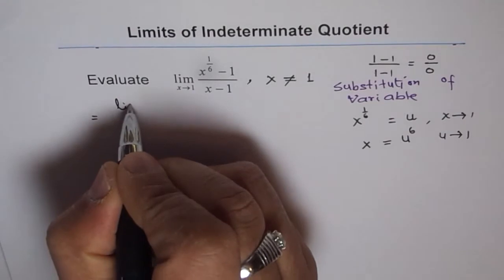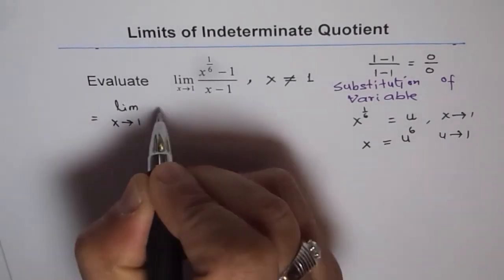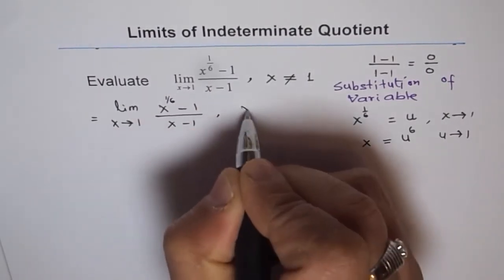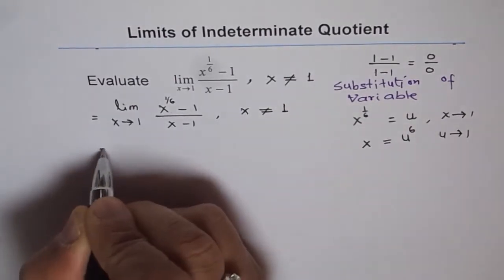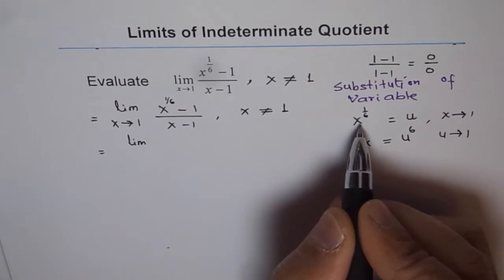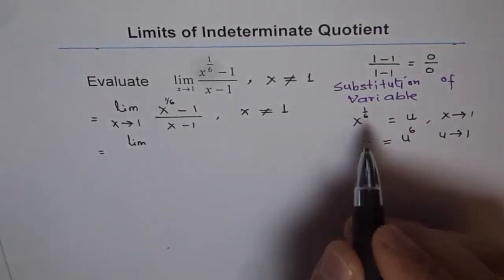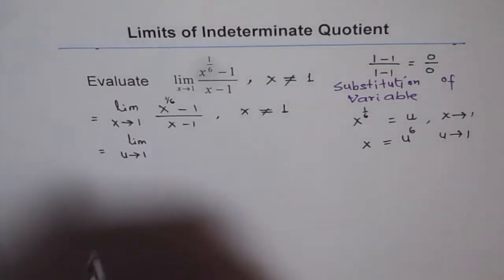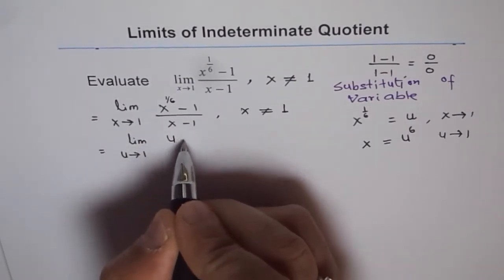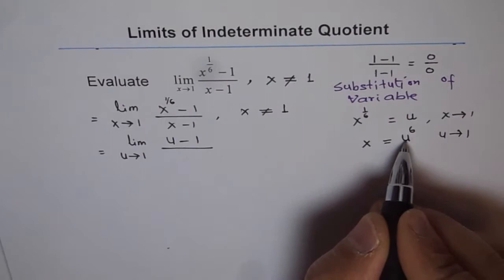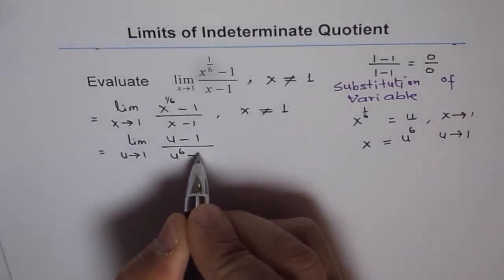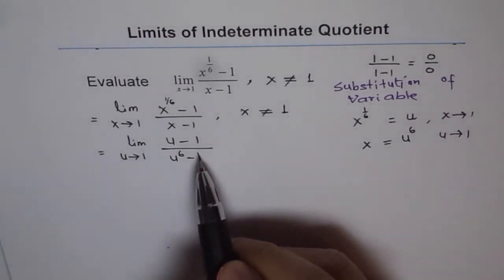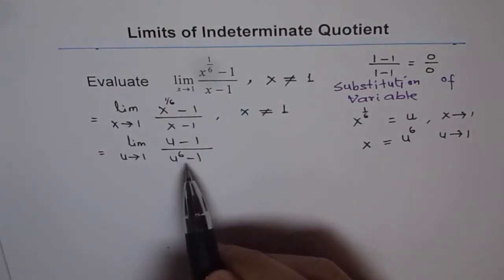Now we are in a position to make the substitution. The original limit as x approaches 1 of x^(1/6) minus 1 over x minus 1, where x is not equal to 1, becomes: limit as u approaches 1 of u minus 1 over u to the power of 6 minus 1. This expression no longer has a radical, so we have simplified the problem. Now let's factor it.